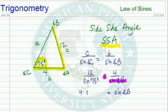So we've got 4 times the sine of 75 degrees, and then we're going to divide by 12. Now what we're going to end up with when we do this is we're going to end up with a decimal number. So we're not going to be finding a side length.